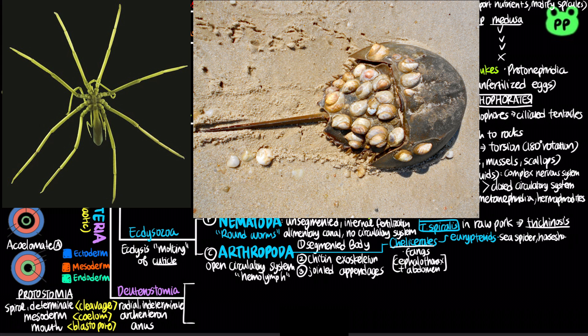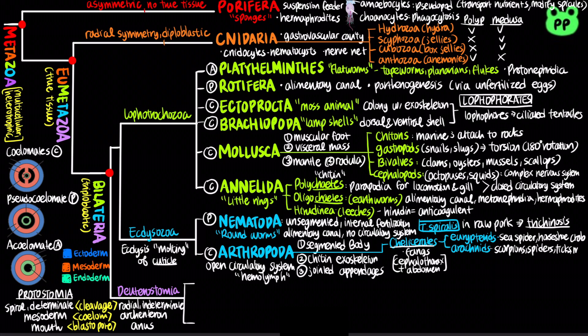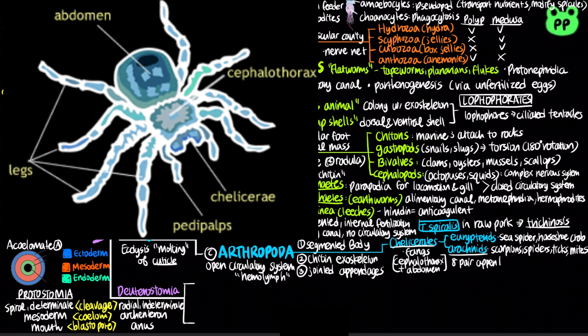Most chelicerates belong to arachnids, including scorpions, spiders, ticks, and mites. Arachnids are characterized by having six pairs of appendages, including the chelicerae and a pair of appendages called pedipalps.